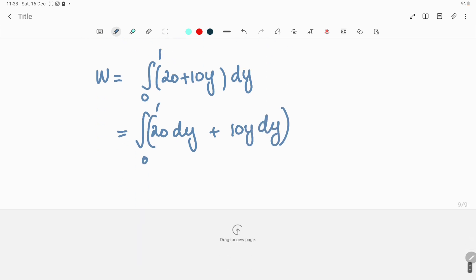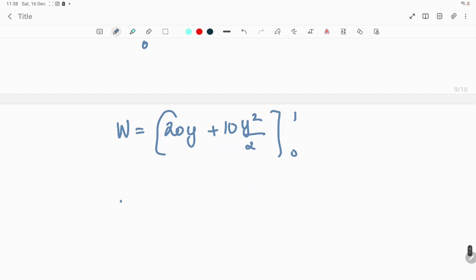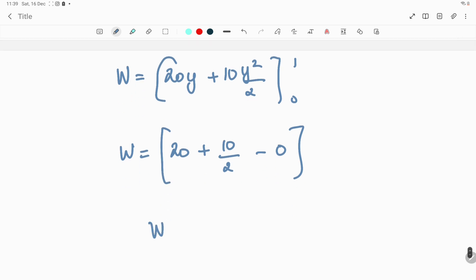When you do that, you're going to get work done is equal to 20y plus 10y squared by 2 over the limits 0 to 1. You just get 20 plus 10 by 2 minus 0 minus 0, so that is going to be 25 joules. Therefore, option A will be correct.